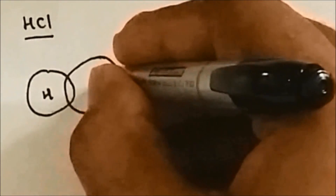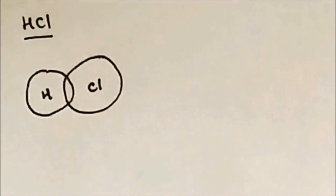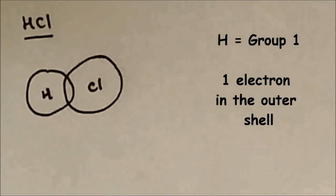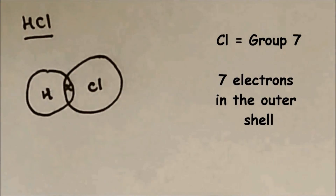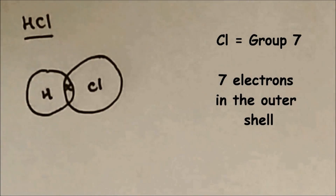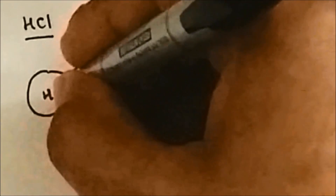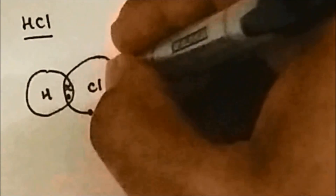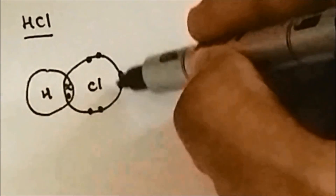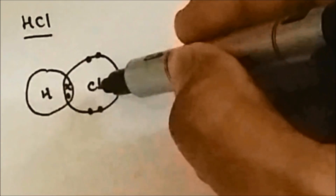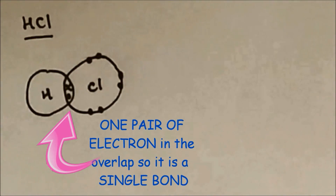The next molecule is hydrogen chloride (HCl). One atom is hydrogen and the other is chlorine. Hydrogen is in group 1, so it has one electron in the outer shell involved in the overlap. Chlorine is in group 7, so it has seven electrons in the outer shell — one is involved in the overlap and the remaining six are outside. Counting the electrons for chlorine gives seven, so this is a single bond with one pair of electrons in the overlap.